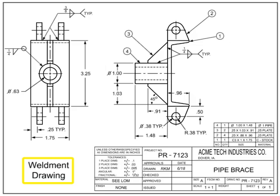Weldment drawings are a unique form of detail drawings. Weldments occur when multiple pieces are welded together to form a final item. Weldments are not assemblies, due to the fact that their component parts are not stocked or sold separately, have no use as stand-alone items, and are not detailed on separate drawings. Weldment drawings can also be called inseparable assembly drawings. Welding symbols that indicate the length, type, and other information about the weld are shown in the field of the drawing to indicate the location of the welds.